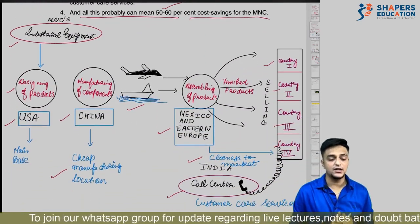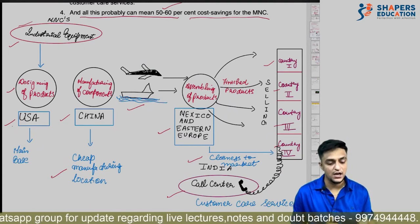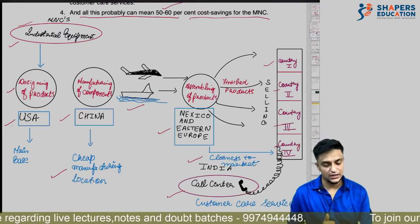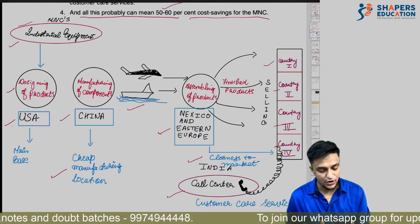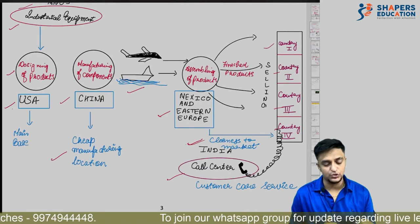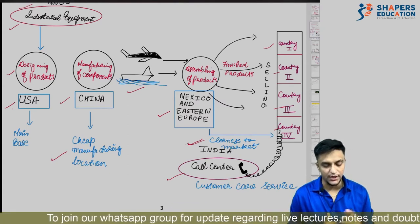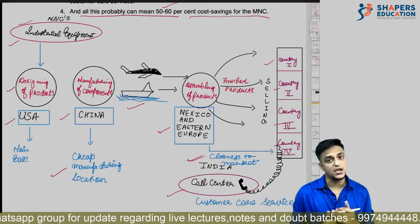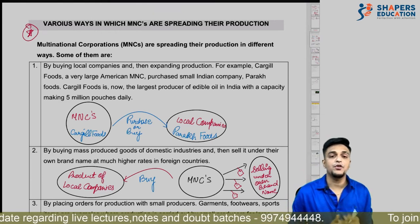To summarize: the MNC manufactures industrial equipment; designing is done in the USA, manufacturing of components is done in China, assembly is in Mexico and Eastern Europe, and call center/technical expert work is done in India because of its educated and skilled people.